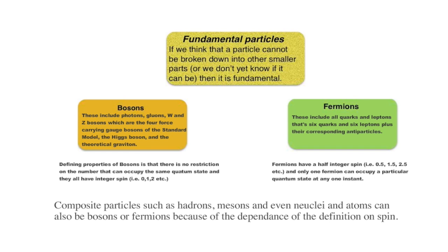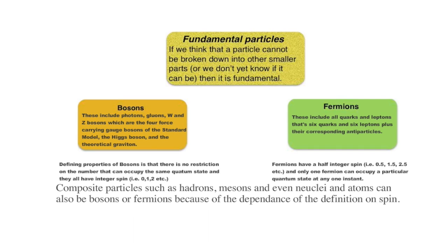Using these definitions, larger composite particles such as hadrons and mesons, even nuclei and whole atoms can also be considered to be either bosons or fermions. That is because of the dependence of the definition on spin.